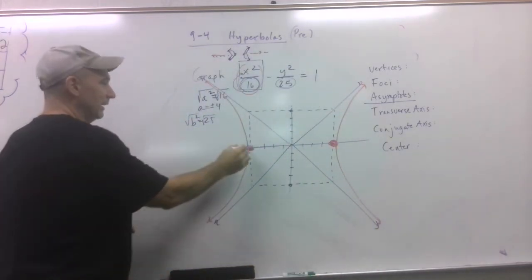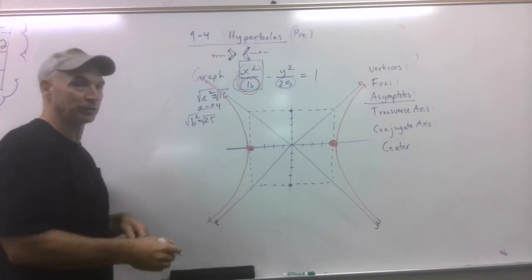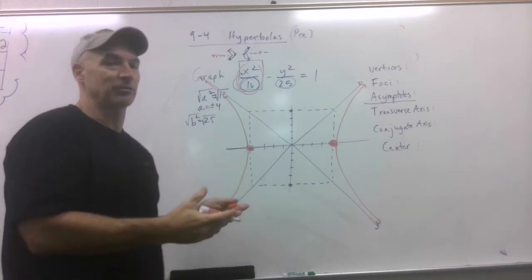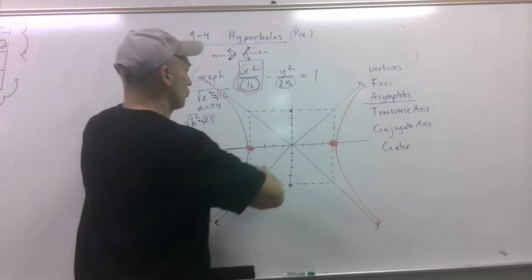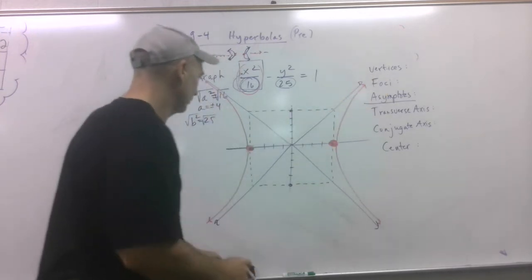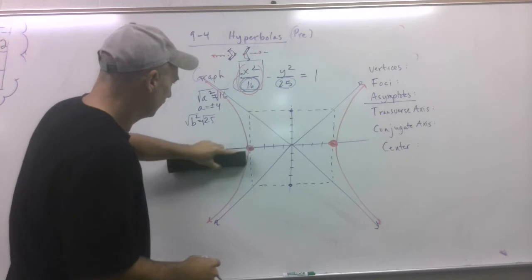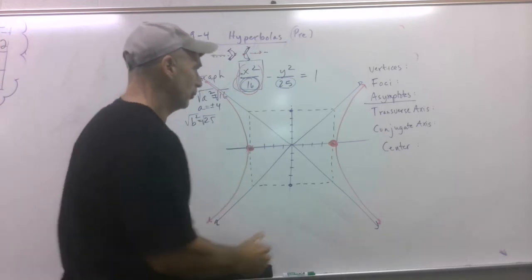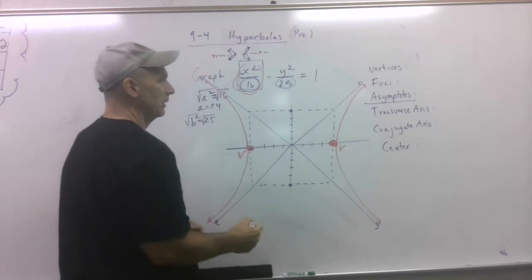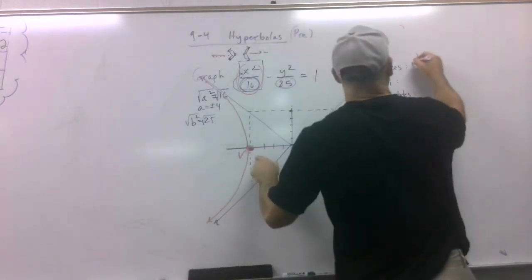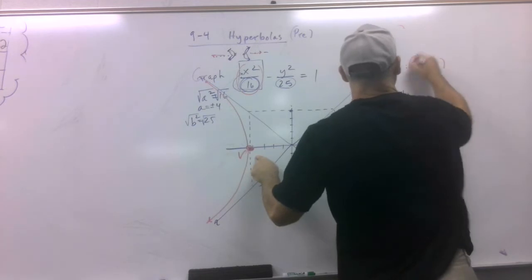Don't get lazy and go like this. Because then you don't understand what an asymptote is. An asymptote is kind of like a gravitational pull for the graph. It's trying to reach it, but it can't. So don't get lazy. Well, this is a vertex and this is a vertex. So that's plus or minus 4, 0.